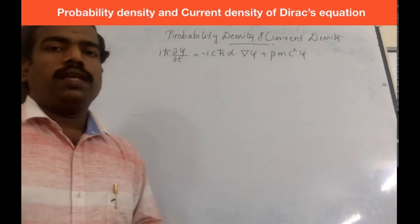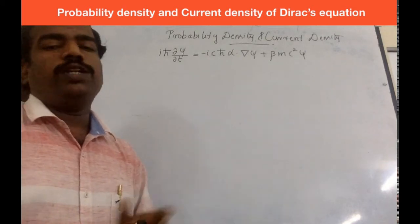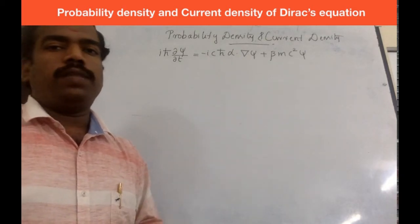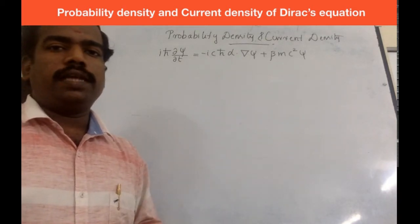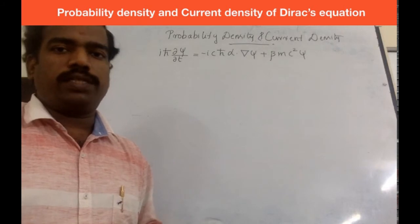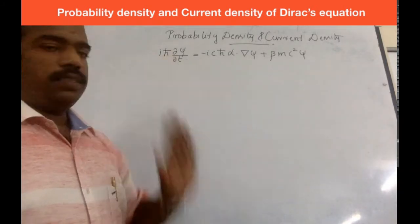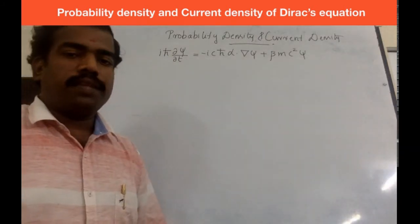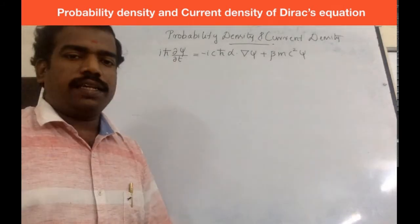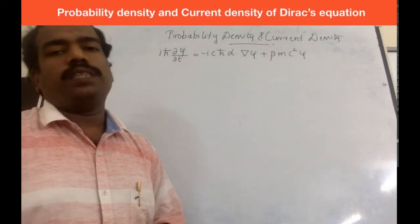Here also we need to find out the probability density and current density of Dirac's equation. We will learn the same equation and the same process.